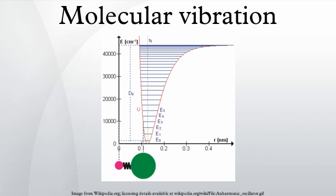In general, a molecule with N atoms has 3N-6 normal modes of vibration, but a linear molecule has 3N-5 such modes, as rotation about its molecular axis cannot be observed.